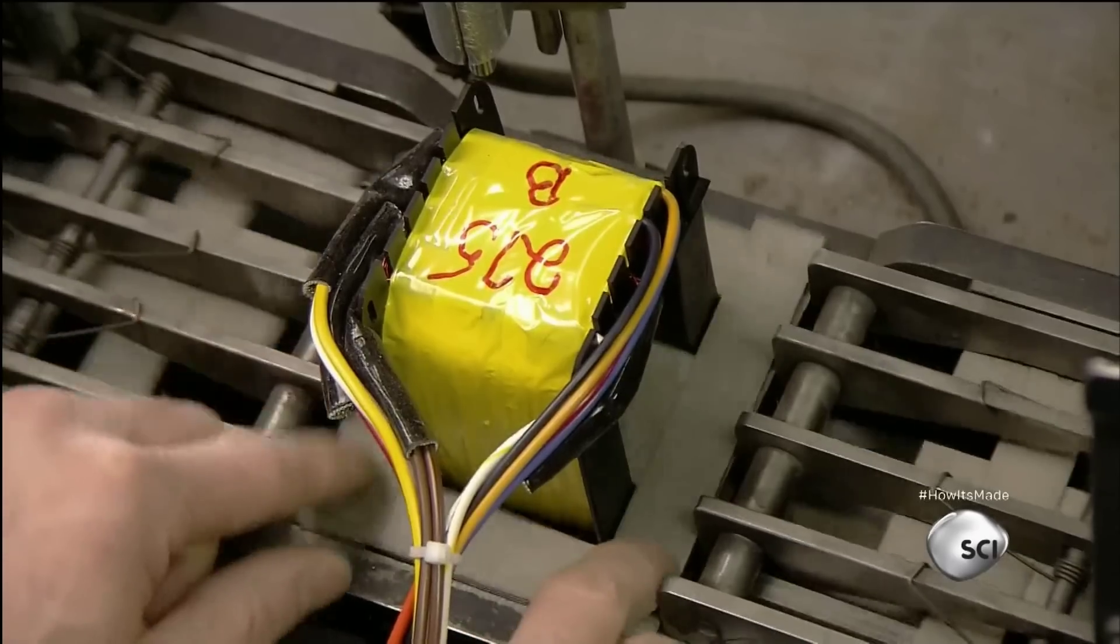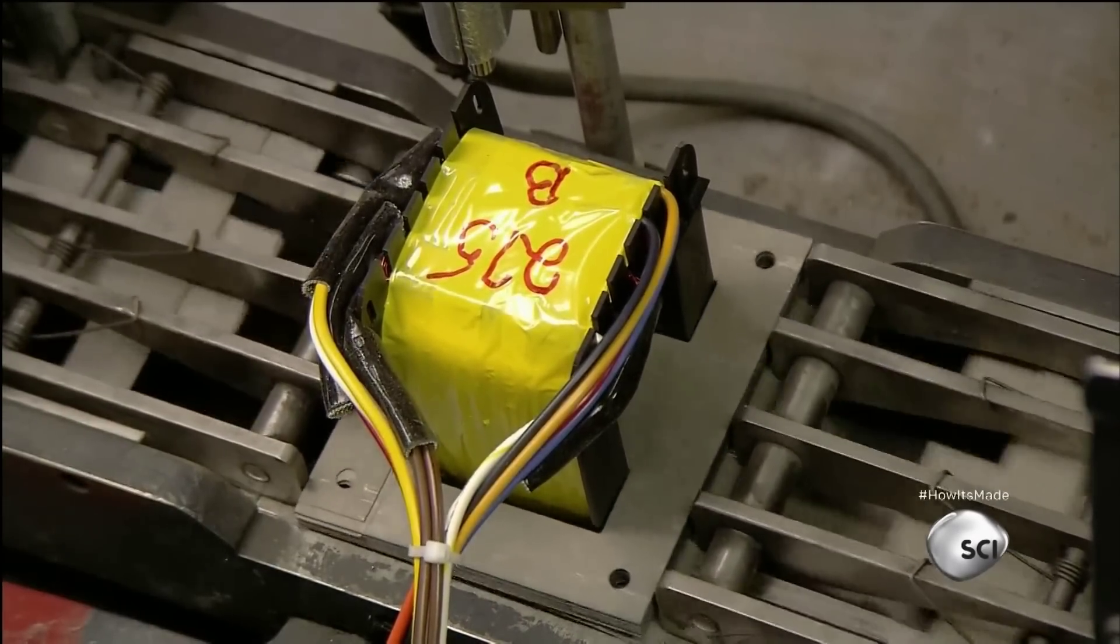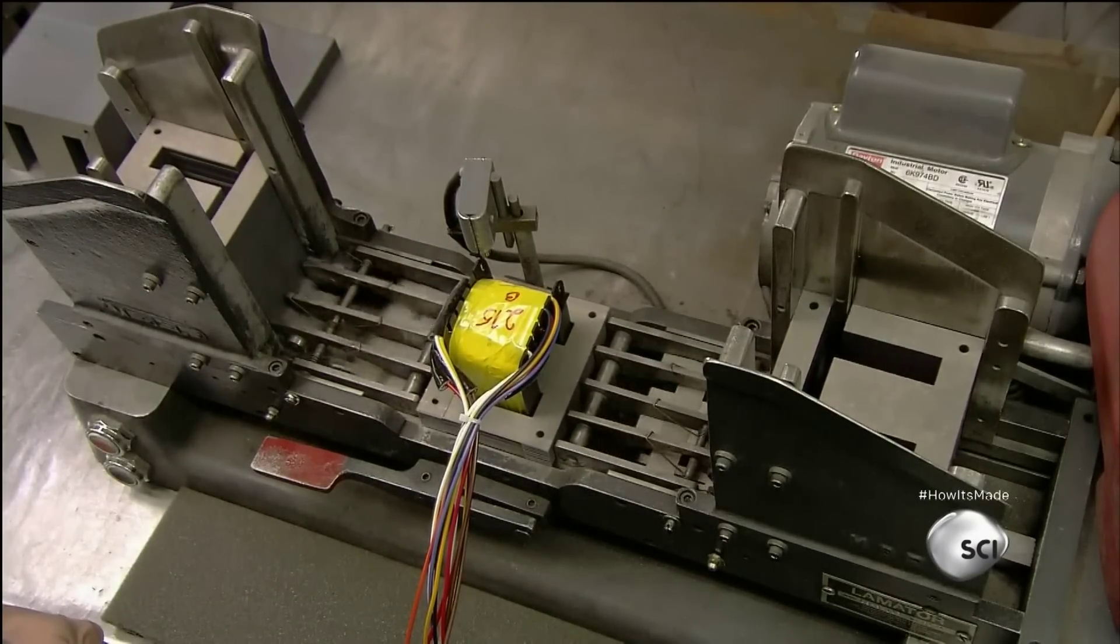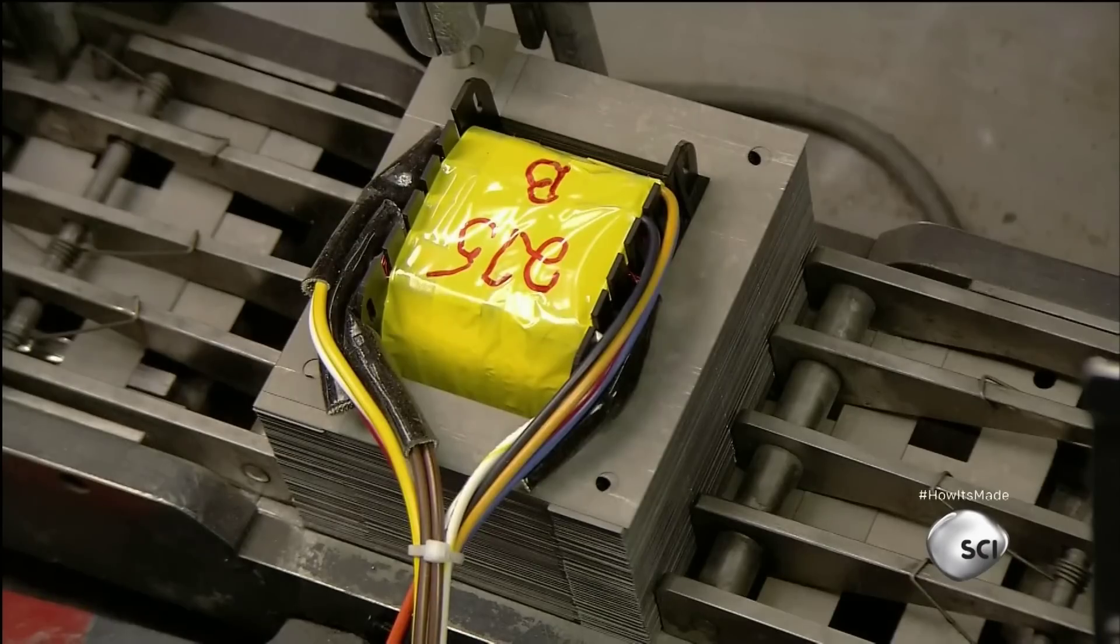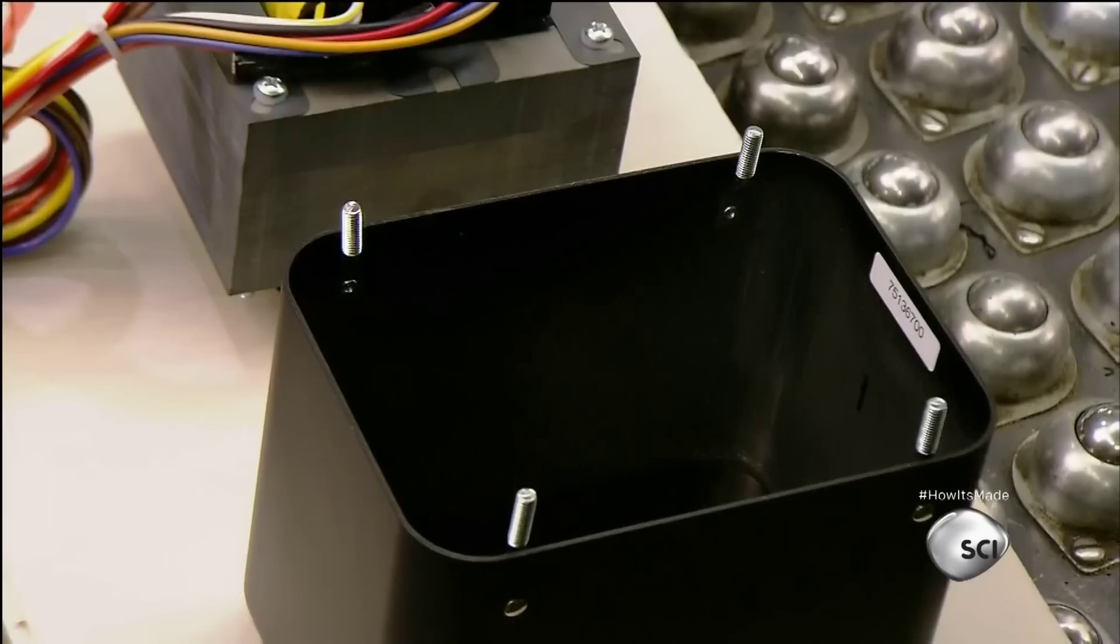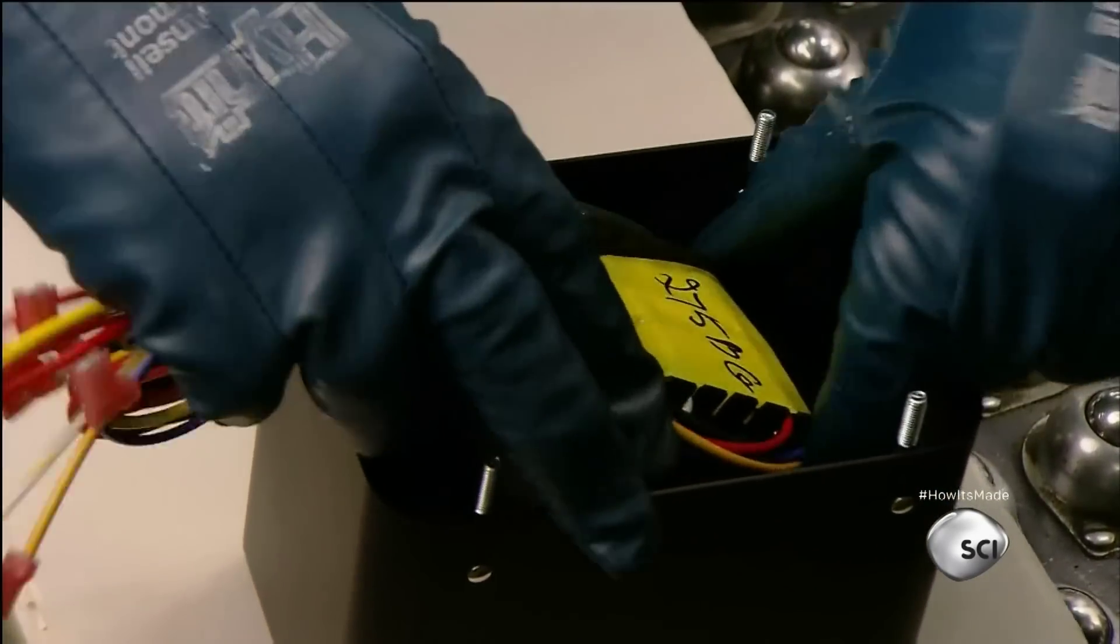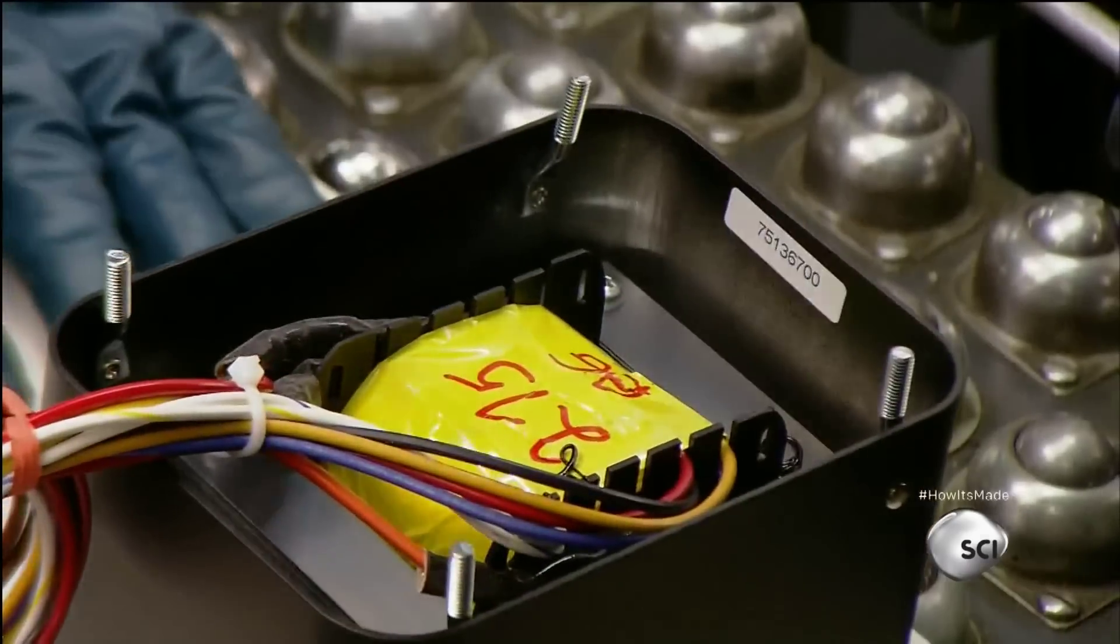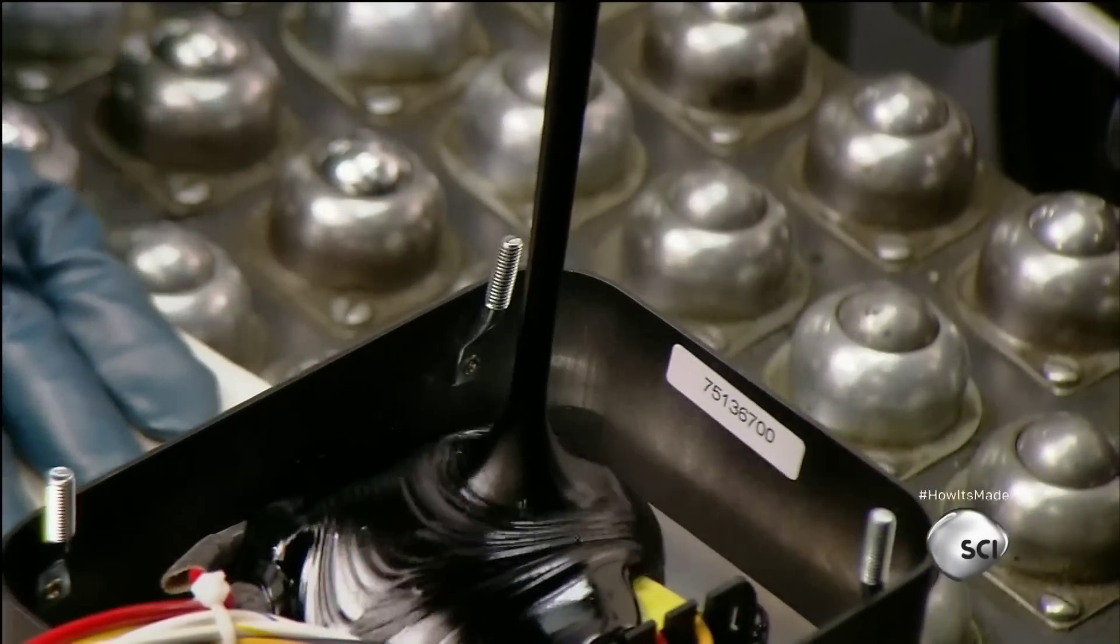They place the bobbin in a lamination machine. Laminations are thin plates of carbon steel. The machine stacks them all around the bobbin. Then workers put a bolt in each corner to hold them together. They place the laminated bobbin in an aluminum housing and pour in hot black tar. This immobilizes the laminations so they won't rattle when the amp is amplifying low frequencies.